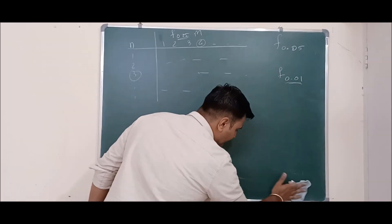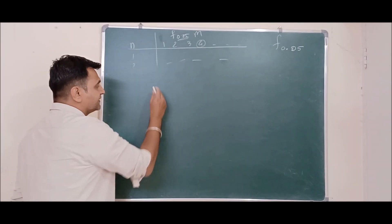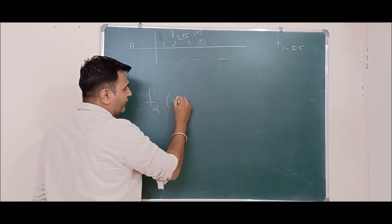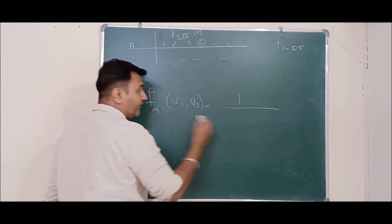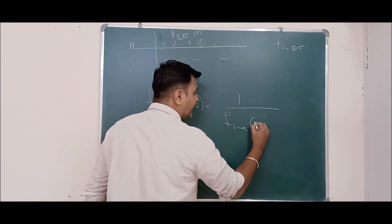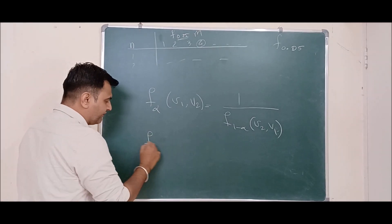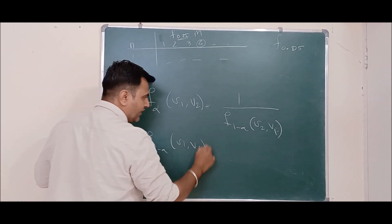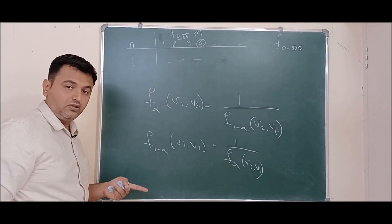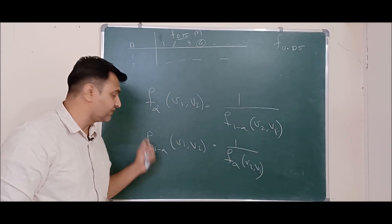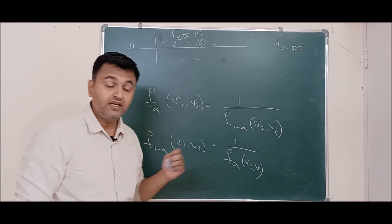One very nice relation that the F variable satisfies is: F_α(V1, V2) equals 1 divided by F_{1−α}(V2, V1). Equivalently, F_{1−α}(V1, V2) equals 1 upon F_α(V2, V1). So when you take the reciprocal, the degrees of freedom get reversed and you get 1 minus alpha. This is a useful theorem when solving problems involving F distribution.